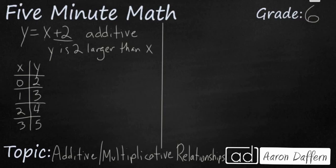So you see your y is getting larger by 1 because your x gets larger by 1, but the distance is always 2. Your y is always 2 larger than your x because you have a plus 2 additive relationship.